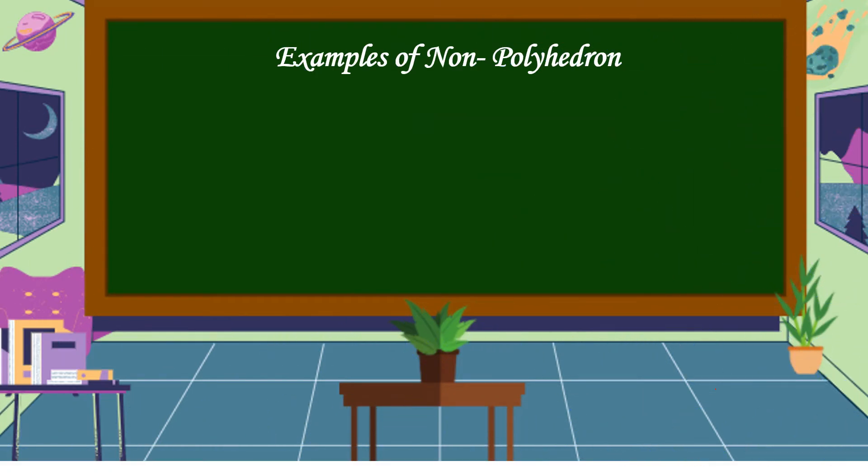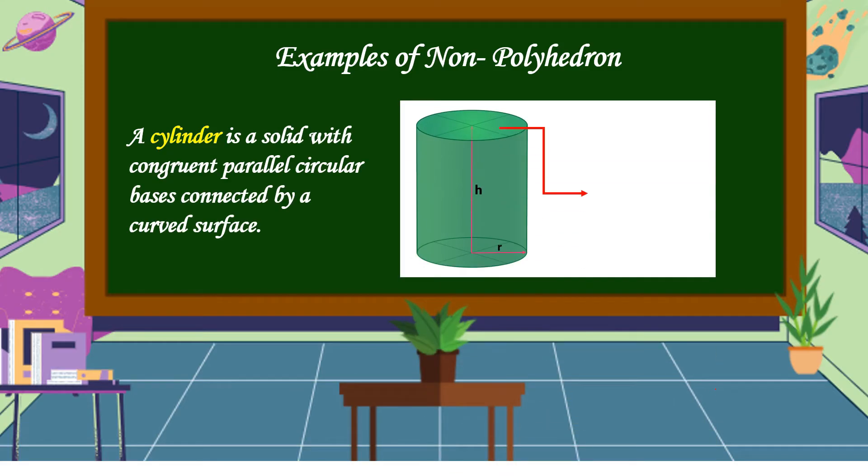Examples of non-polyhedron. Number one, a cylinder. What is a cylinder? A cylinder is a solid with congruent parallel circular bases connected by a curved surface.